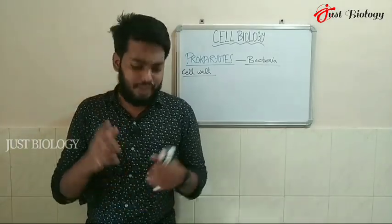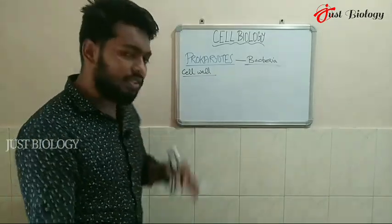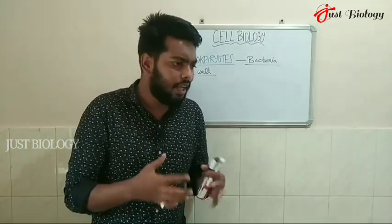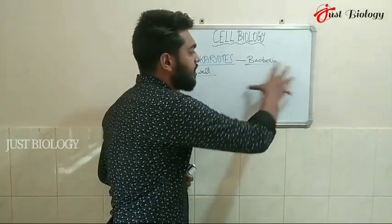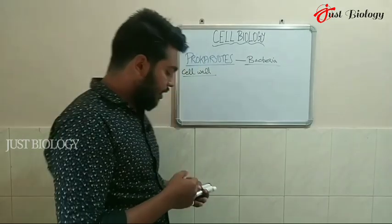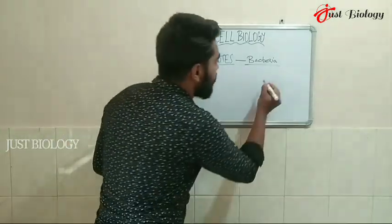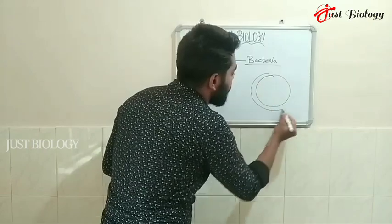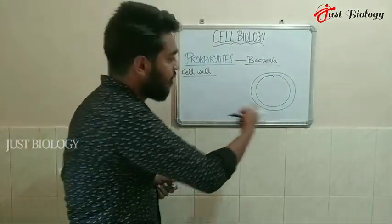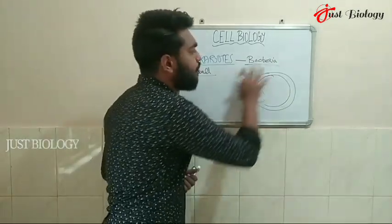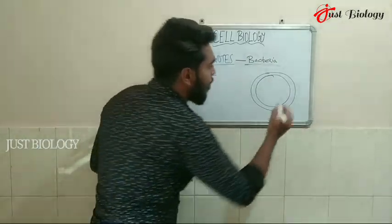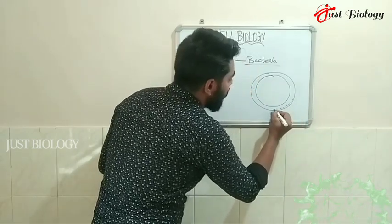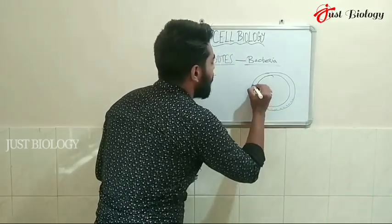Regarding cell wall composition, bacteria can be classified into two classes based on the thickness of the cell wall. Before starting this classification, we should understand the structure and architecture of the cell wall — how it is made and assembled. The cell wall can be either thick or thin.